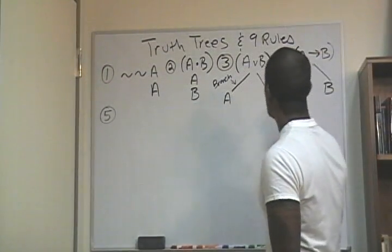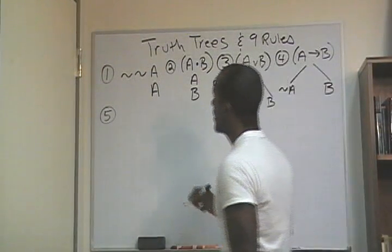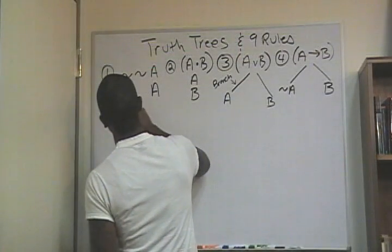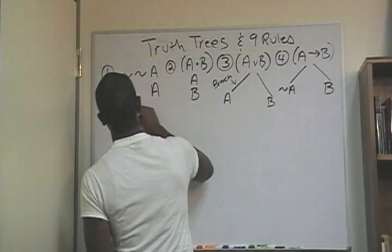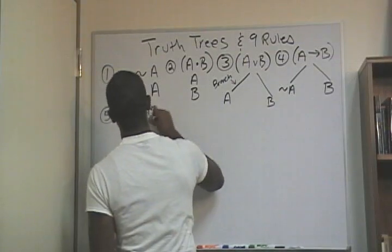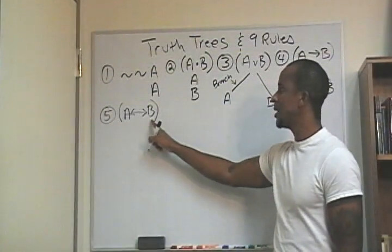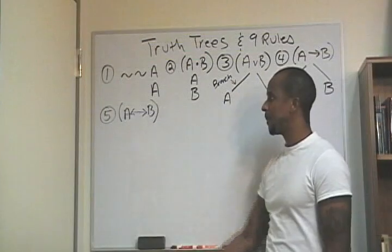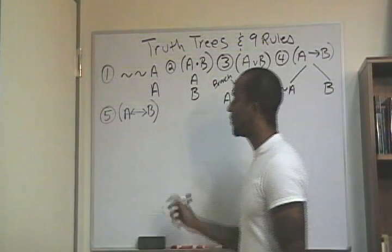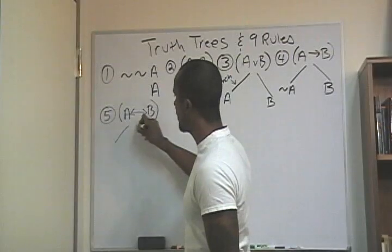Number five is going to be the biconditional. So we have the claim: if and only if A, then B. How do I make sense of this? I'm going to create two branches.